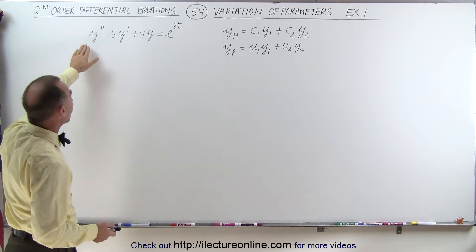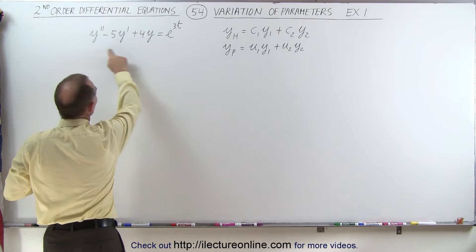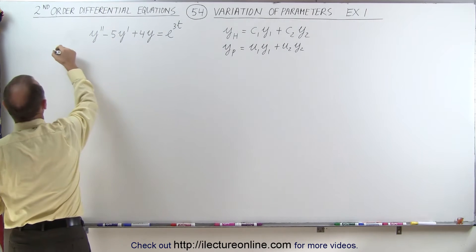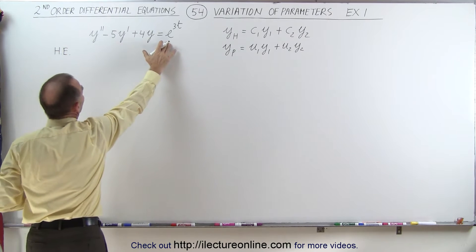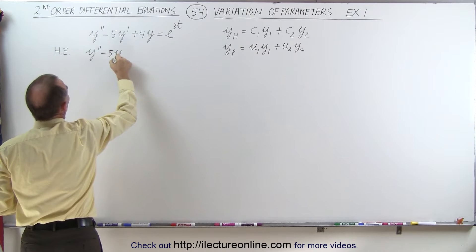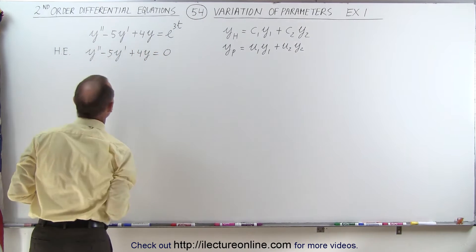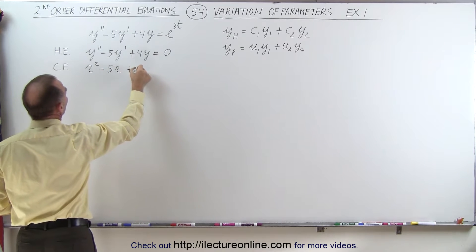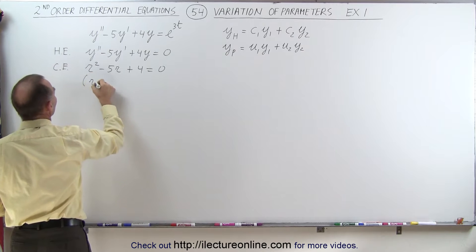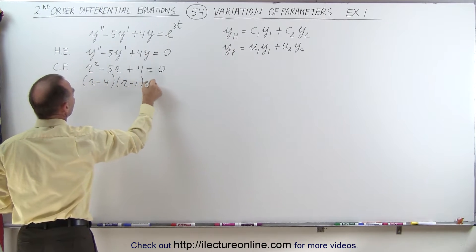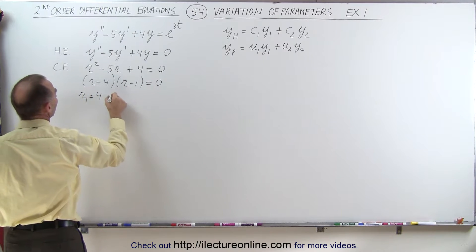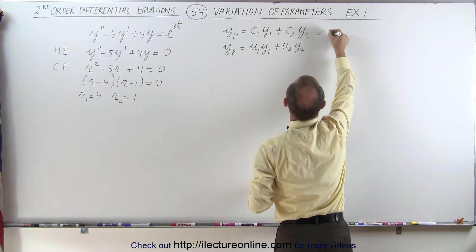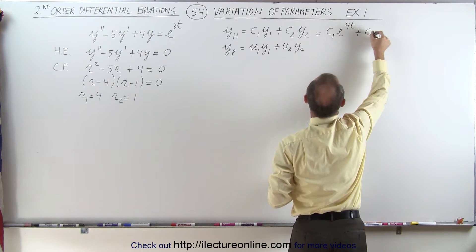The beginning is exactly the same — we need to find the homogeneous part of the solution. We start with the homogeneous equation, and we expect it to look like c1 e to the 4t plus c2 e to the t when we're done. We need to find y1 and y2, so we set the equation equal to zero: y double prime minus 5y prime plus 4y equals 0. Using the characteristic equation, r squared minus 5r plus 4 equals 0, which factors as r minus 4 times r minus 1 equals 0, giving roots r equals 4 and r equals 1.